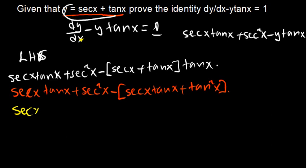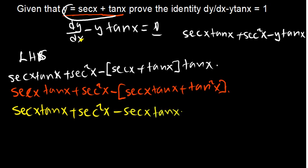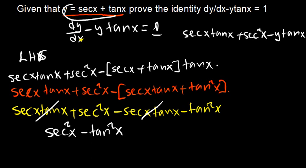Distributing the negative gives: sec x·tan x plus sec squared x minus sec x·tan x minus tan squared x. This sec x·tan x and this sec x·tan x are the same, so they cancel because of the minus sign. What we are left with is sec squared x minus tan squared x.